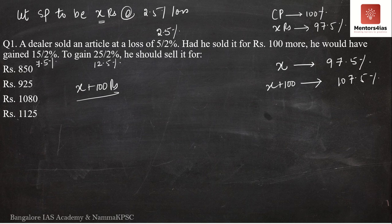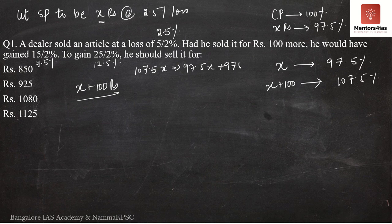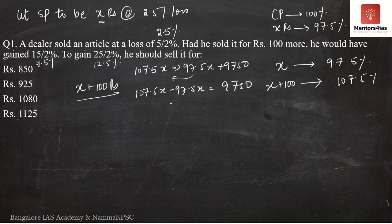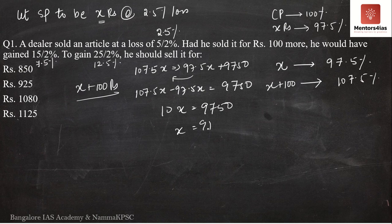Now we can determine the value of X. Cross multiplying, we get 107.5 × X = 97.5X + 9750. Taking terms to the left side: 107.5X − 97.5X = 9750, which gives 10X = 9750, therefore X = 975 rupees. So when he sells at 975 rupees, he is at a loss of 2.5 percent.